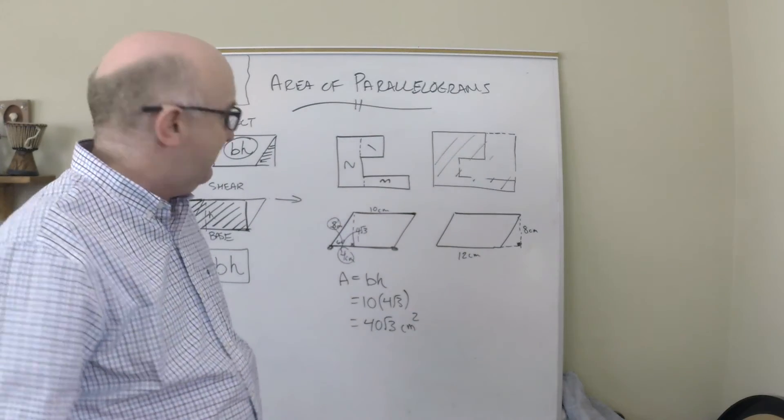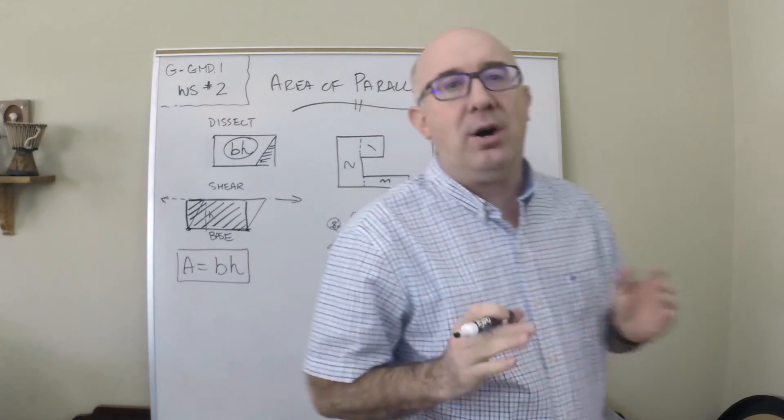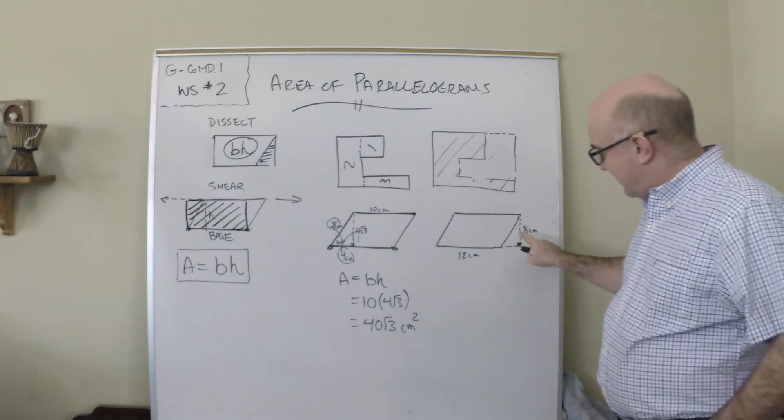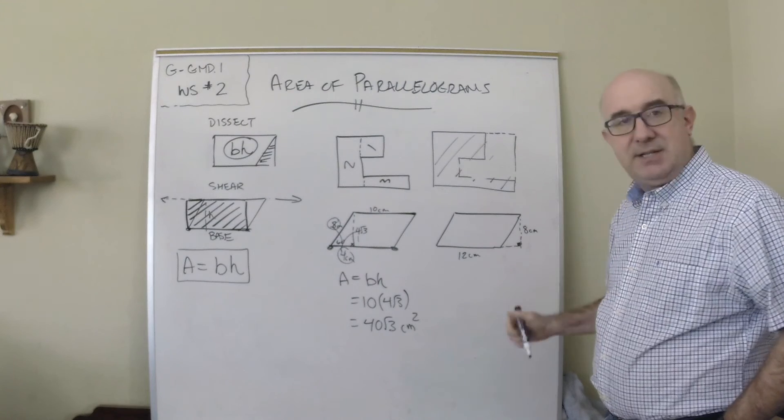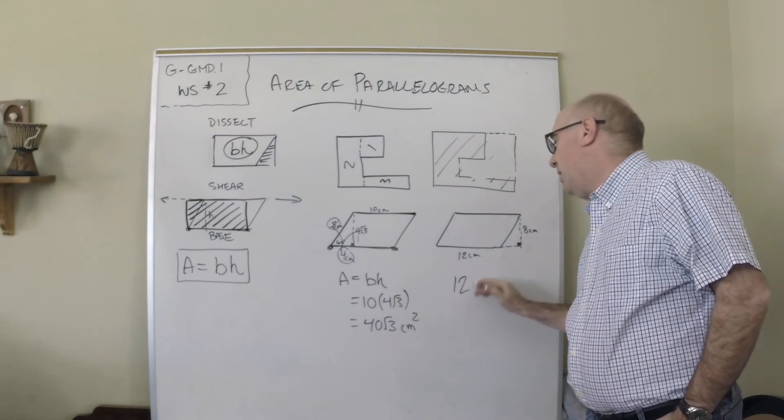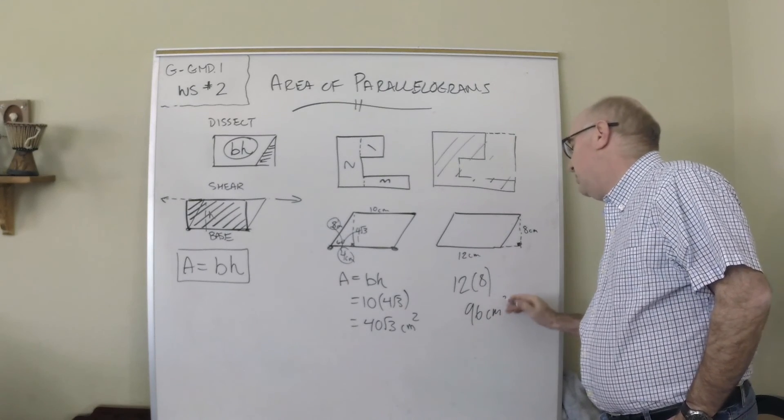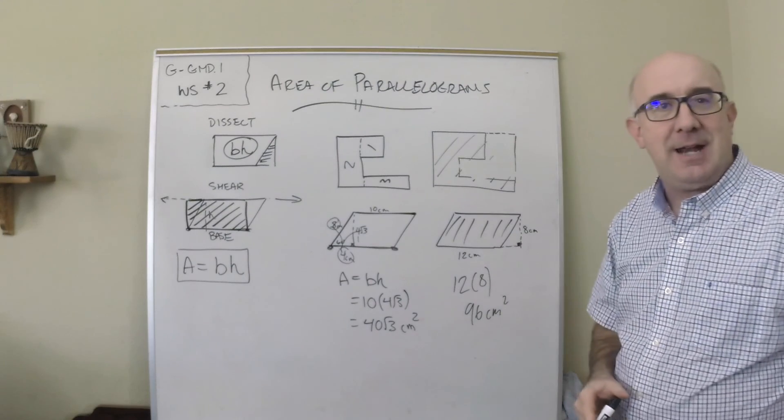Over here there's nothing really tricky about this, but there are times when the height is given to you outside. That doesn't mean add this area into it; it just means that's where they've placed the measurement. So this is just 12 times 8, that's 96 centimeters squared to find that region there.